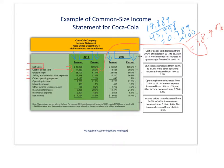Once we have that information, we can compare to the previous year. Cost of goods sold for 2014 was 38.9% of net sales, but in the previous year it was 39.3% of net sales. So cost of goods sold as a percentage of sales has gone down, which most companies would view as a good thing. Even though their net sales have gone down, their cost of goods sold as a percent of net sales went down as well. We can look at this year-over-year to get a sense of how these line items appear as a percent of net sales.